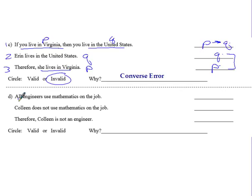All right. Taking a look at the next one. All engineers use mathematics on the job. Notice no if then, but you could say if you are an engineer, then you use mathematics on the job. So being an engineer is P. Using mathematics on the job can be Q. First step. Always P, Q. Sick of me saying it yet? Probably. Colleen does not use mathematics on the job. Using mathematics on the job is Q. I'm telling you that someone does not use mathematics. So I am telling you the opposite of Q.